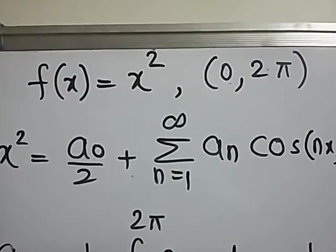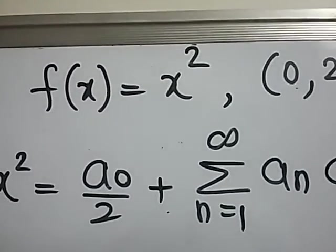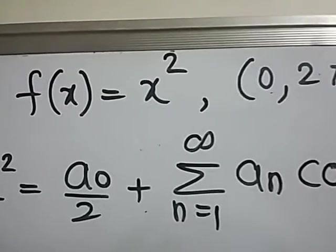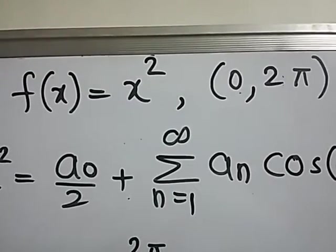Hi friends, let's see a problem on Fourier series. The given function is f(x) equal to x square and is defined in the interval 0 to 2π.